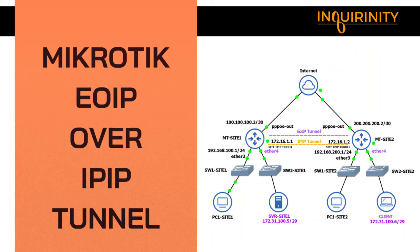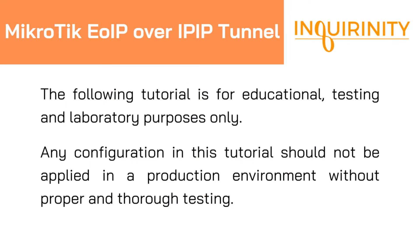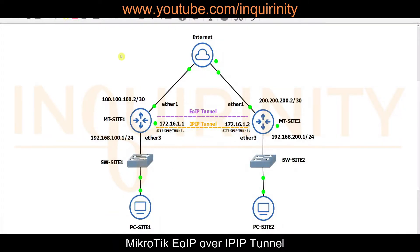This video covers MicroTik EOIP over IPIP Tunnel. From our IPIP Tunnel video, we have two sites each with its own MicroTik. Site 1 has subnet 192.168.100.0/24 and Site 2 has subnet 192.168.200.0/24. Each site has a connection to the internet: 100.100.100.2 on ether1 for Site 1, and 200.200.200.2 on ether1 for Site 2.